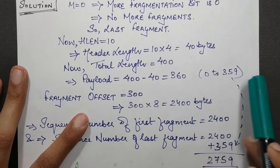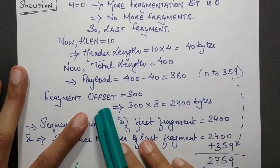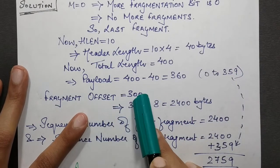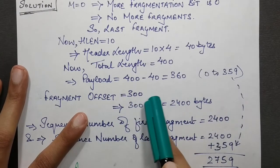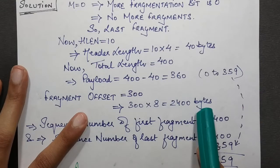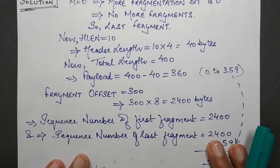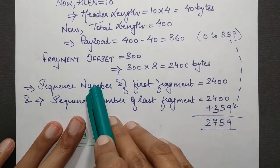Now the Fragment Offset was 300. That means in bytes, if we find out, it will be 300 × 8 = 2400 bytes.